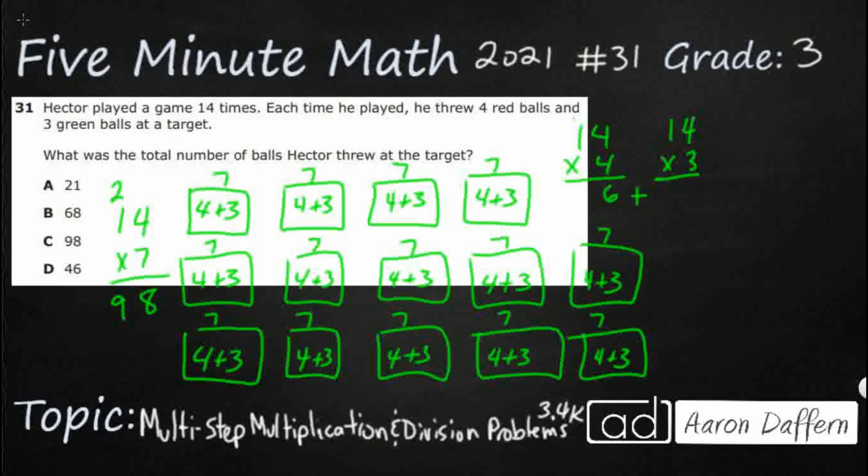So, 14 times four is going to be, let's see, four times four is 16. We're going to add that one back in. Four times one is four. Add that one is five. So, that's 56, which is not an answer selection.